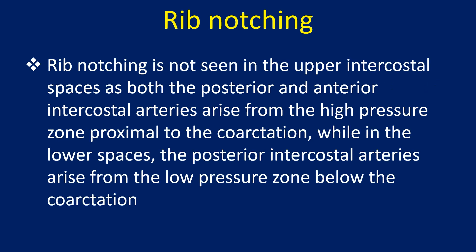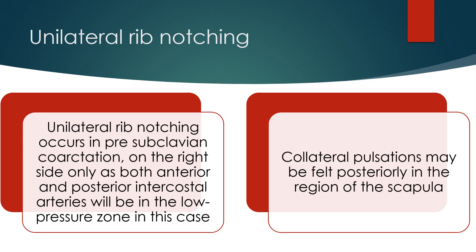Rib notching is not seen in the upper intercostal spaces as both the posterior and anterior intercostal arteries arise from the high pressure zone proximal to the coarctation, while in the lower spaces the posterior intercostal arteries arise from the low pressure zone below the coarctation. Unilateral rib notching occurs in pre-subclavian coarctation on the right side only, as both anterior and posterior intercostal arteries will be in the low pressure zone in this case.